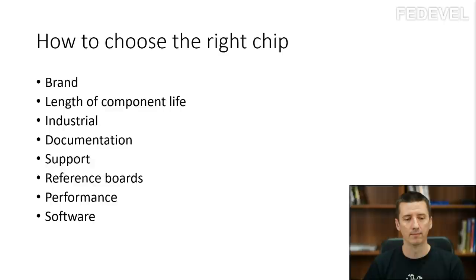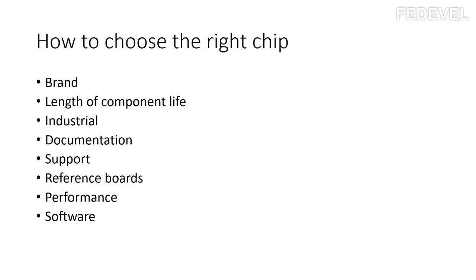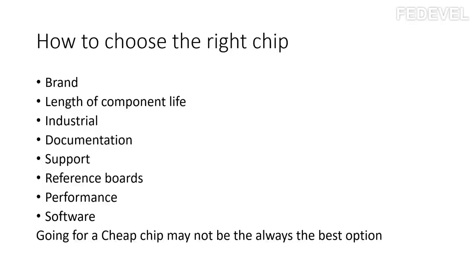This is a super important point. You can spend a lot of time on software, and if you use the right chips that are already supported, it can be very, very helpful and can speed up the development process of your whole product. If you are designing a board with a microcontroller, you may want to use chips that other people normally connect with that microcontroller, so you can find code examples on the internet or on the chip manufacturer's website. All the points we talked about today mean that going for the cheapest option may not always be the best choice for your designs.